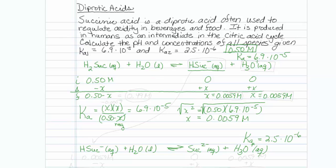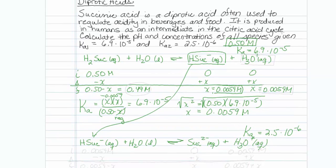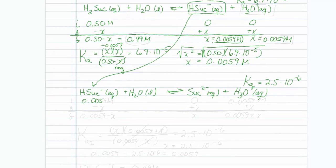And for my original H2 succinate, I have to subtract 0.0059, which rounds up to 0.01. So technically, when I do the subtraction, this is 0.49 molar. So I've got some concentrations, but what about the second reaction? Alright, well, let's think about this. My H succinate concentration is the same one I calculated in the first reaction, 0.0059 molar. Water, I'm not going to worry about.